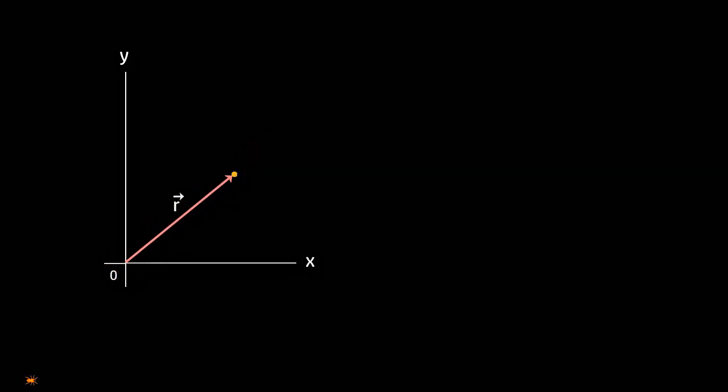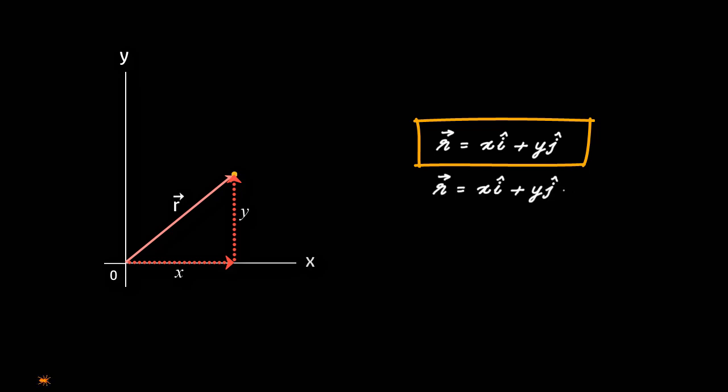In two dimensions, we write it in unit vector notation as r = xi + yj, where x and y are the scalar components of the vector. If the particle is moving in three dimensions, we just add one more vector component, zk, and write it as r = xi + yj + zk.